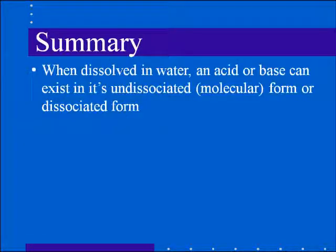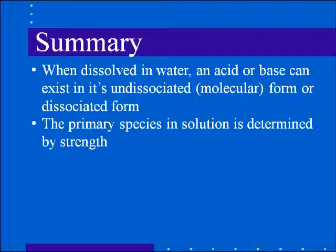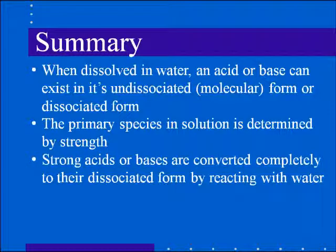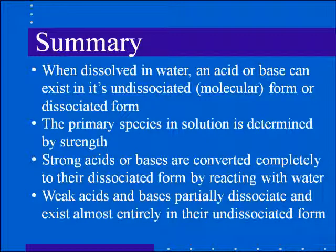To summarize: when you dissolve an acid or base in water, they can be found in one of two forms — their undissociated form or their dissociated form. The primary species found in solution is determined by the strength of the acid or base involved. Strong acids and bases are converted completely into their dissociated form: a strong acid becomes H₃O⁺ and a strong base becomes OH⁻. Weak acids and bases only partially dissociate, forming small amounts of H₃O⁺ or OH⁻, and exist almost entirely in their undissociated form. In the next lecture, we will show how to quantitatively describe the difference between a strong acid and a weak acid.